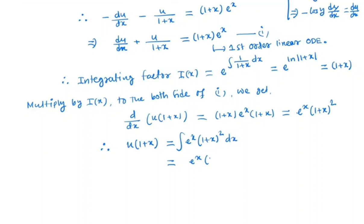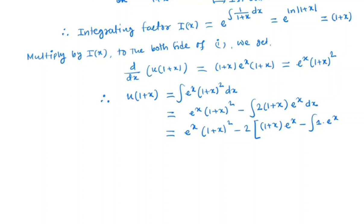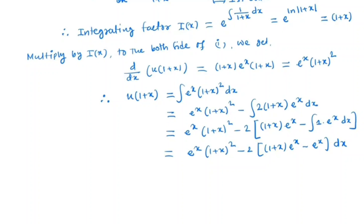Applying integration by parts: e^x (1+x)^2 minus the integral of the derivative of (1+x)^2 — which is 2(1+x) — times e^x dx. Again we have (1+x)^2 minus 2 times, and we apply integration by parts again: (1+x) e^x minus the derivative of (1+x), which is 1, times e^x. So we get e^x.